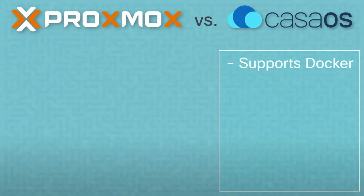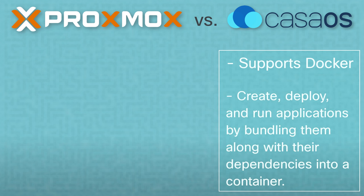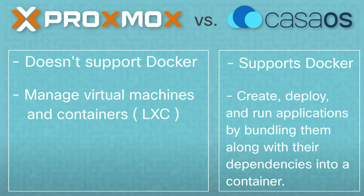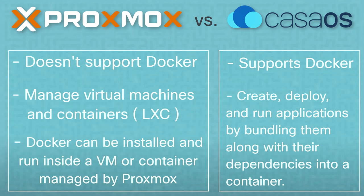Differences between Proxmox and CasaOS: CasaOS has built-in support for Docker, making it easier to create, deploy, and run applications by bundling them along with their dependencies into a container. On the other hand, Proxmox, as a virtualization platform, does not natively support Docker. Proxmox's main function is to manage virtual machines and containers, specifically LXC containers. However, Docker can be installed and run inside a virtual machine or a container managed by Proxmox, but it's not natively integrated into the Proxmox platform.